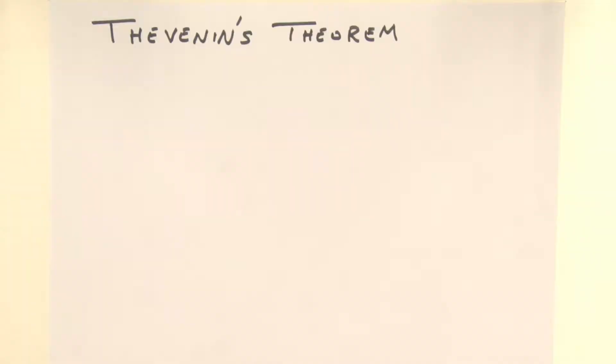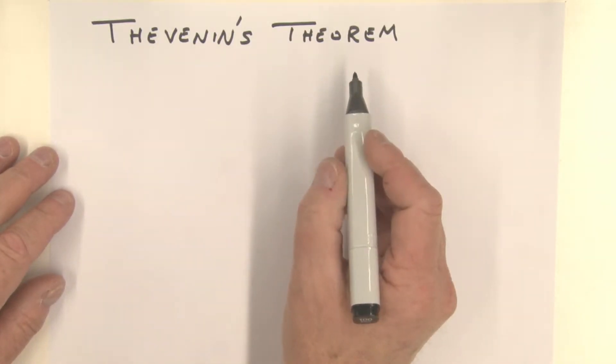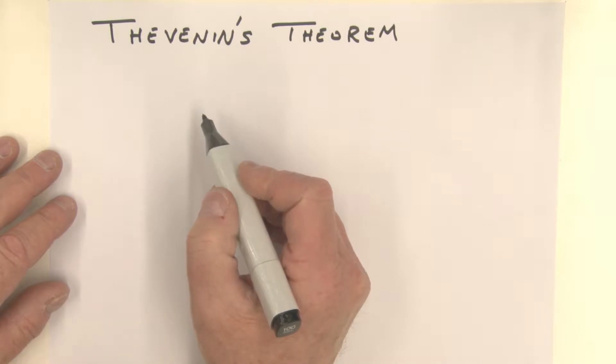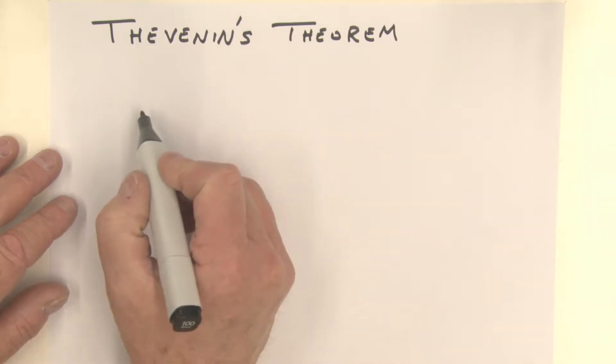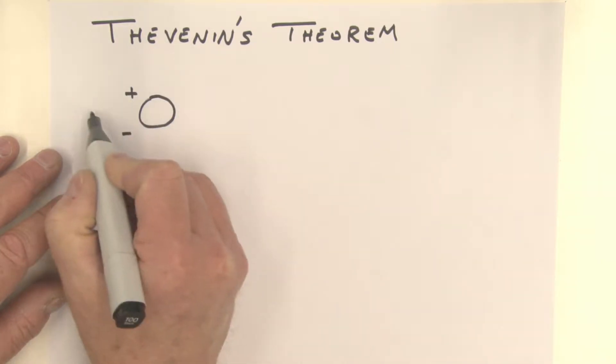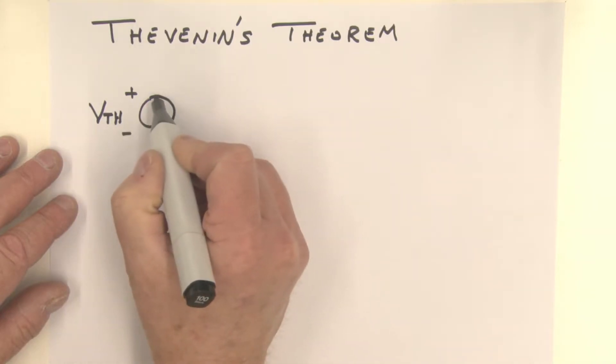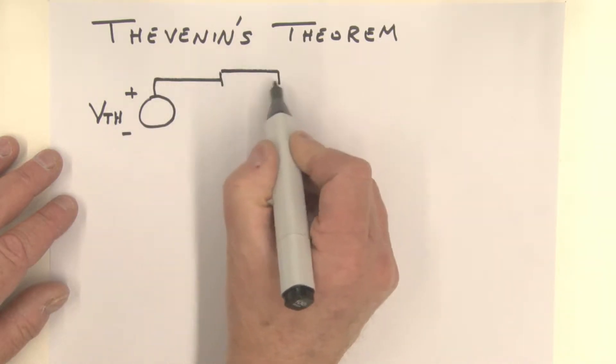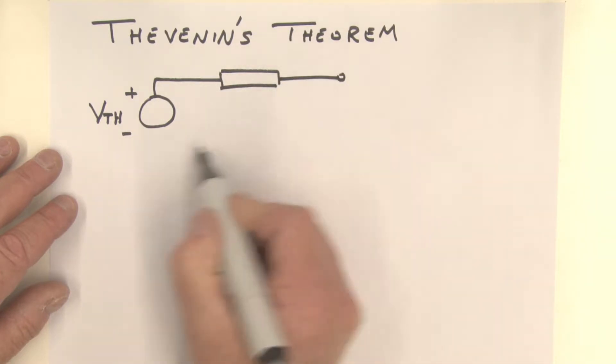Hello, welcome to Circuit Moments. What I'd like to do today is spend a little bit of time talking about Thevenin's theorem and how it relates to a DC circuit. We're going to calculate the Thevenin impedance by first calculating the short circuit current. Thevenin's theorem states that we can have a complex circuit with multiple sources and replace that with a single Thevenin voltage source in series with a single Thevenin impedance.